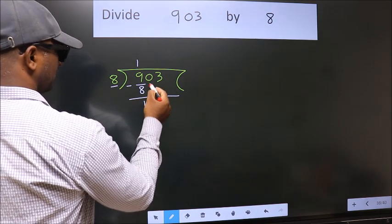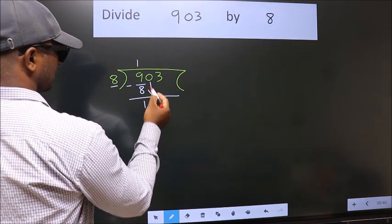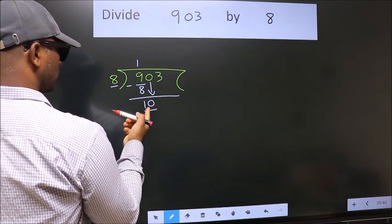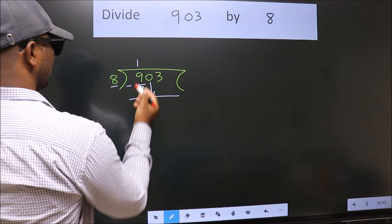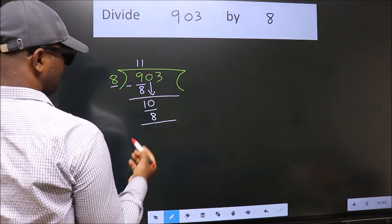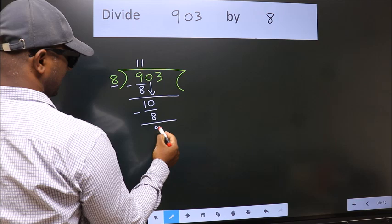After this, bring down the next number. So, 0 down. So, 10. A number close to 10 in the 8 table is 8 times 1 is 8. Now, we subtract and get 2.